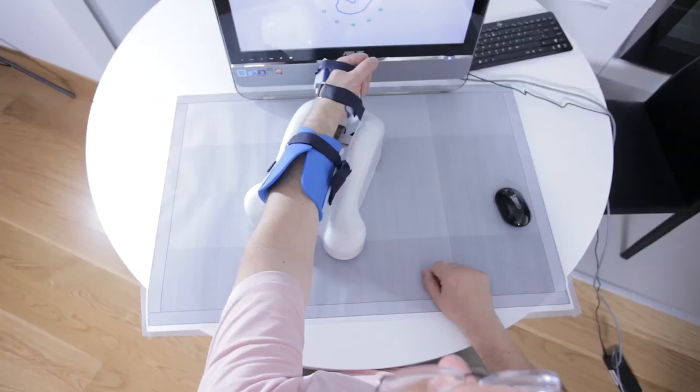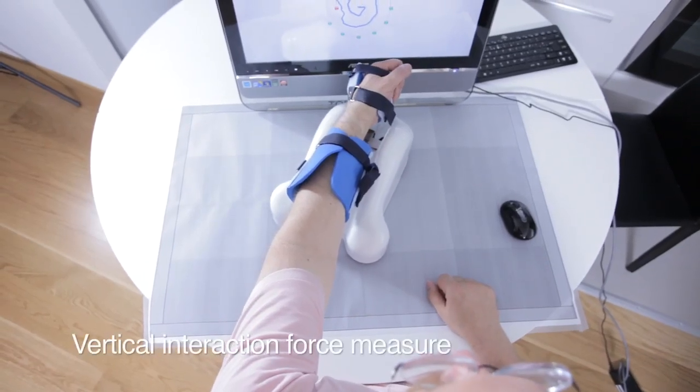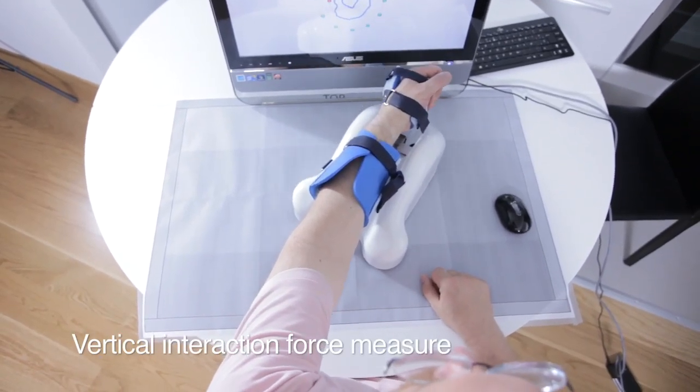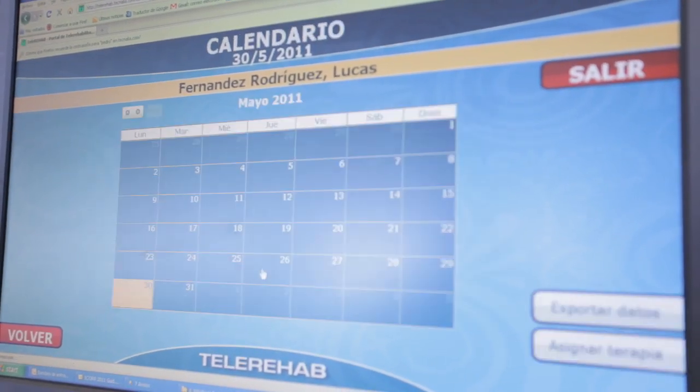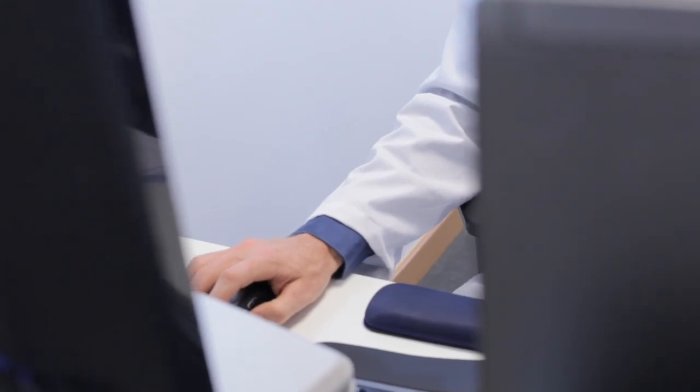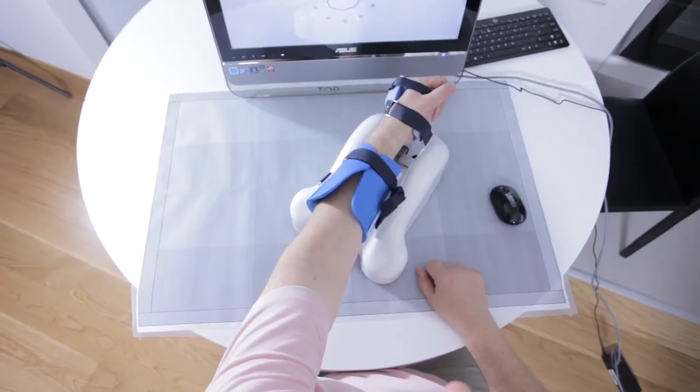The Arm Assist is the only in-home device that measures the amount of vertical interaction forces between the user and device. This measure is important in being able to progressively increase the loading demand on the patient as the active range of motion improves.